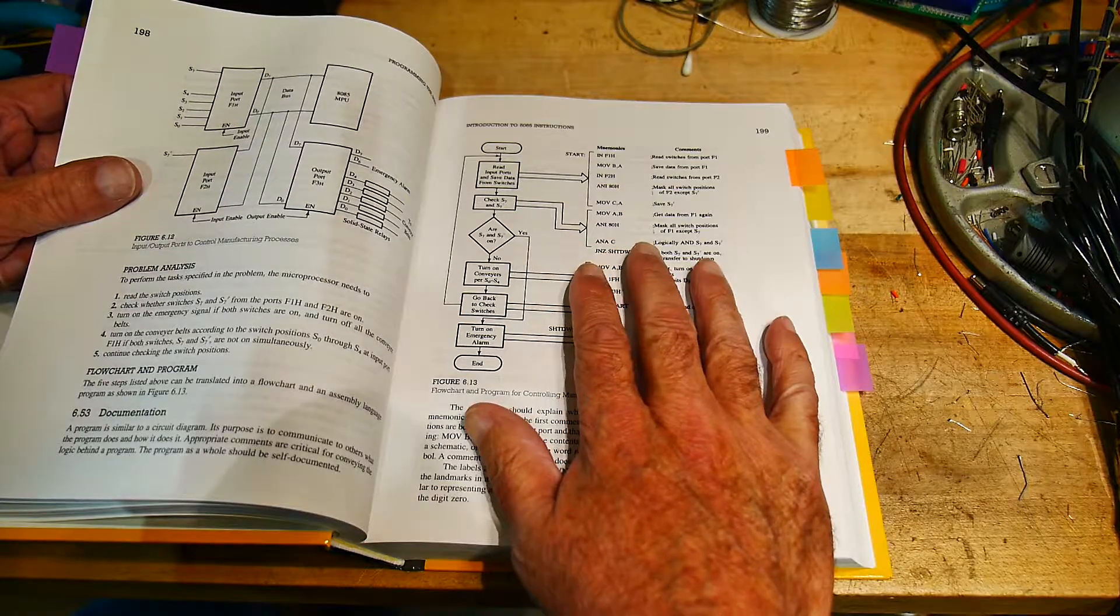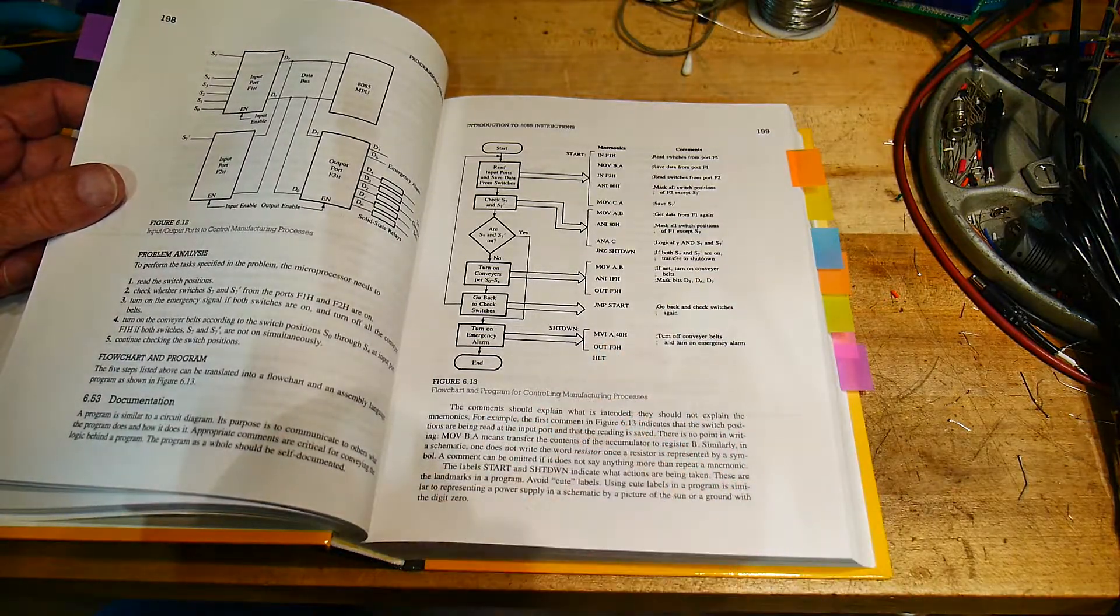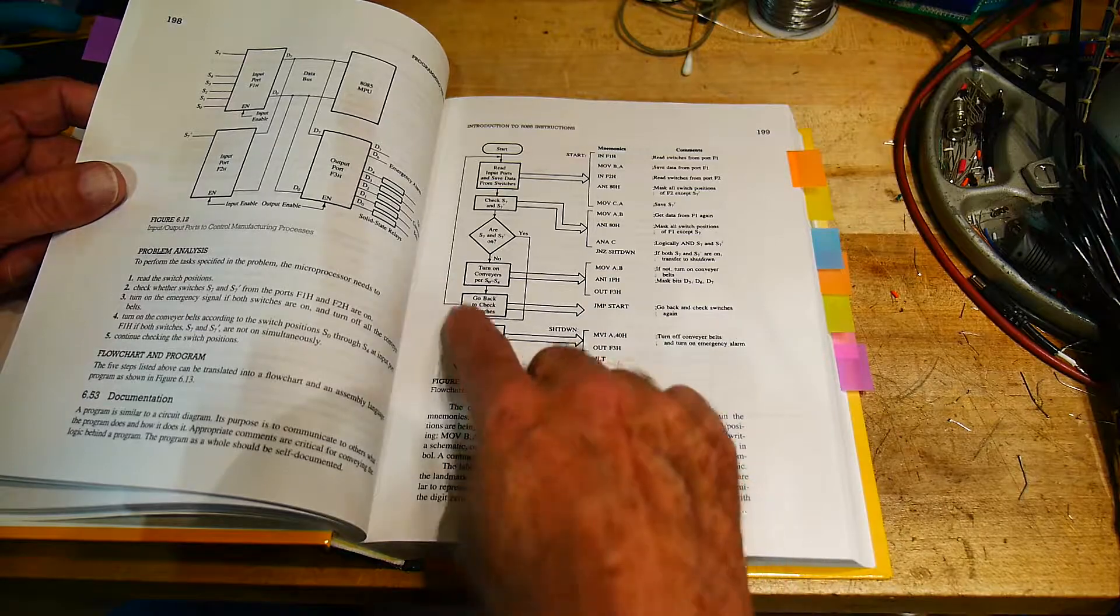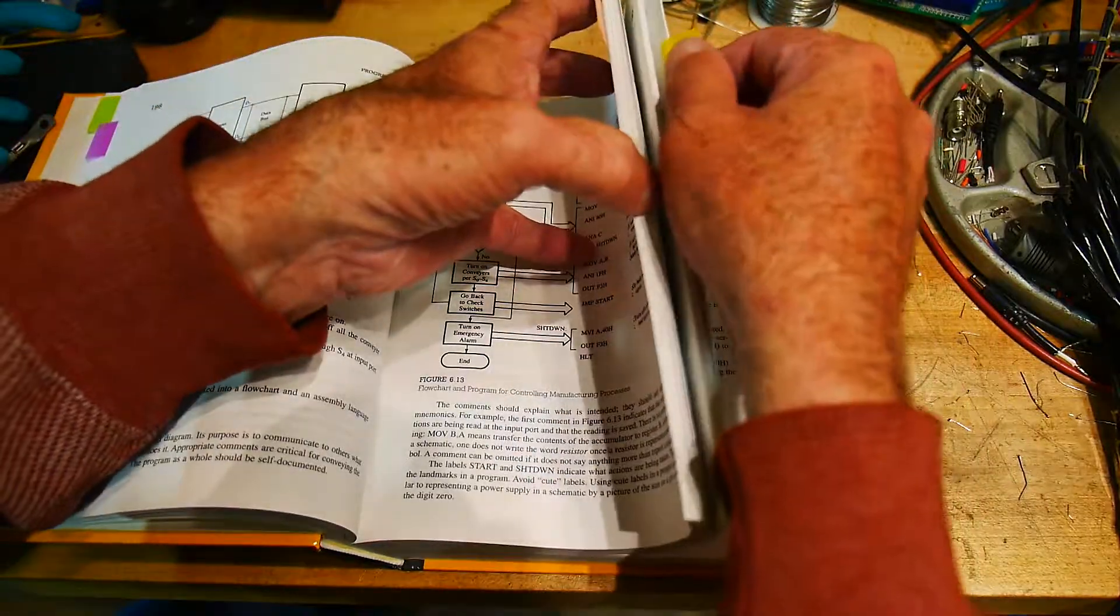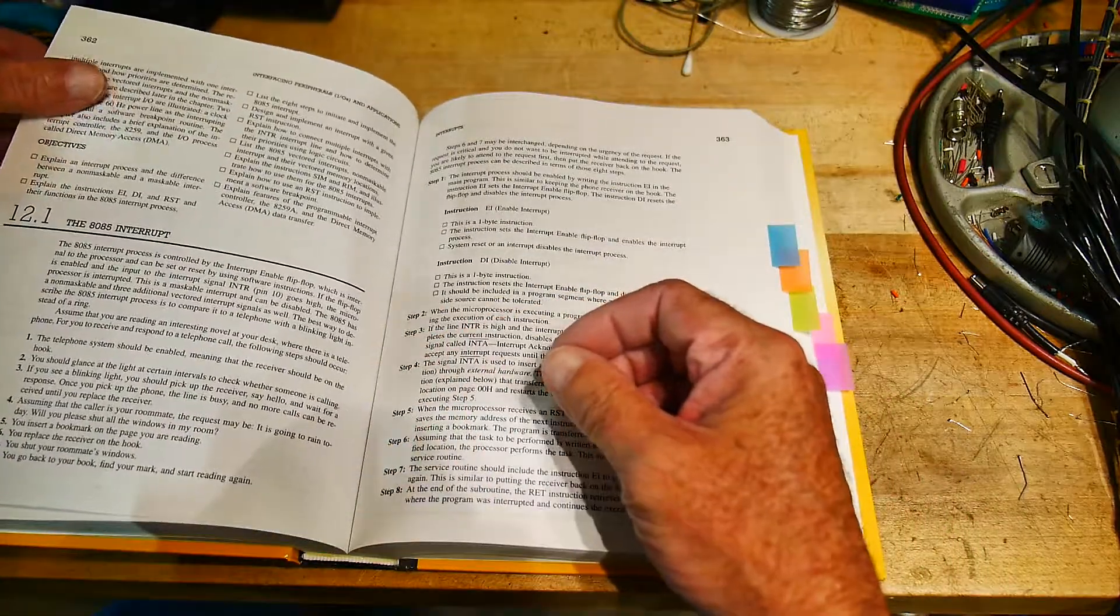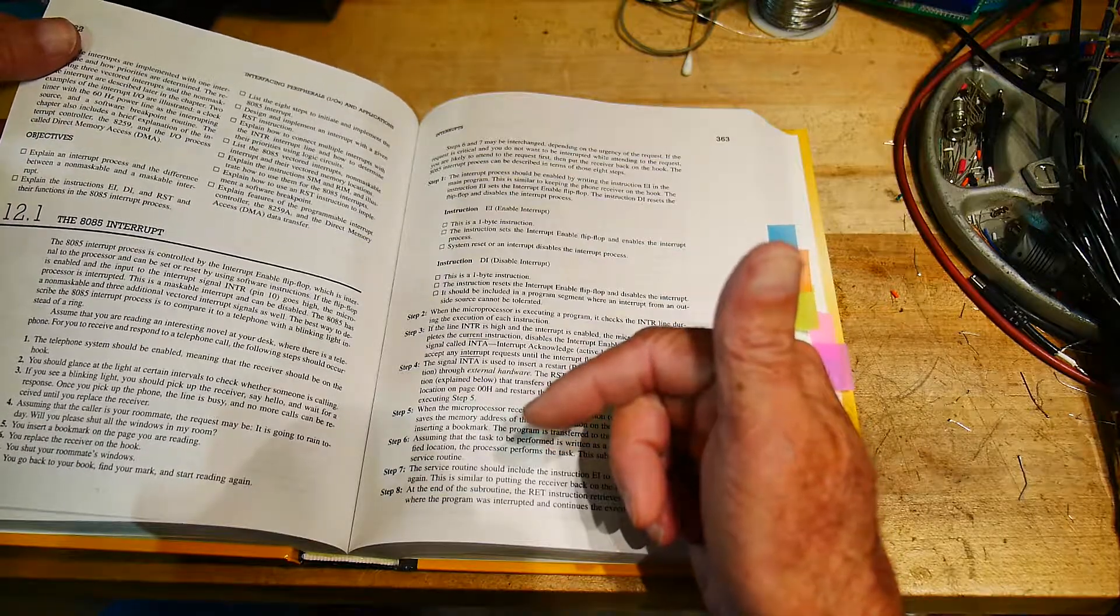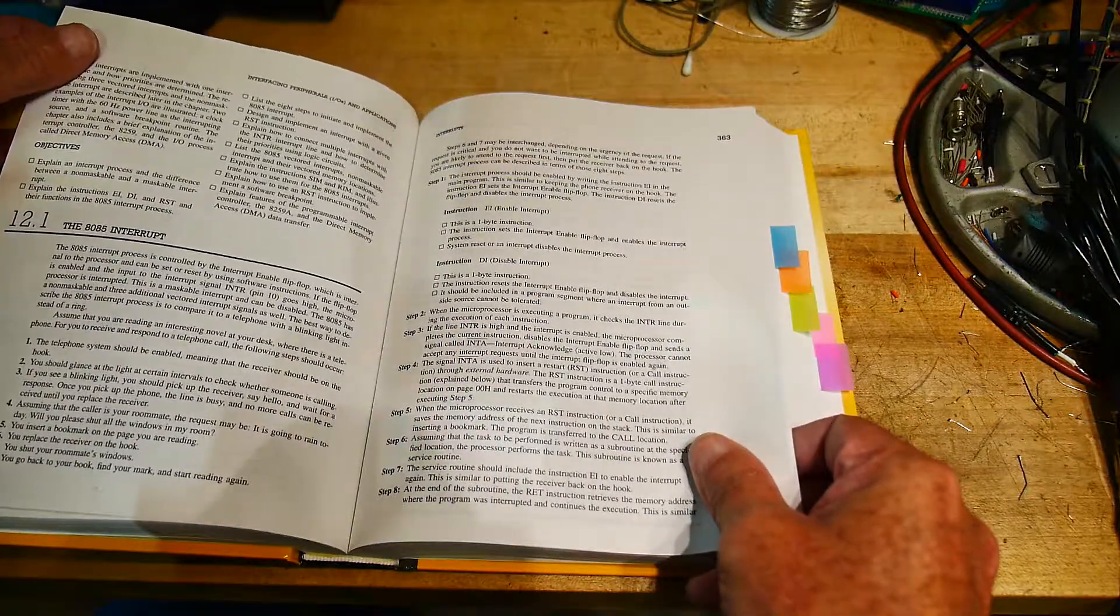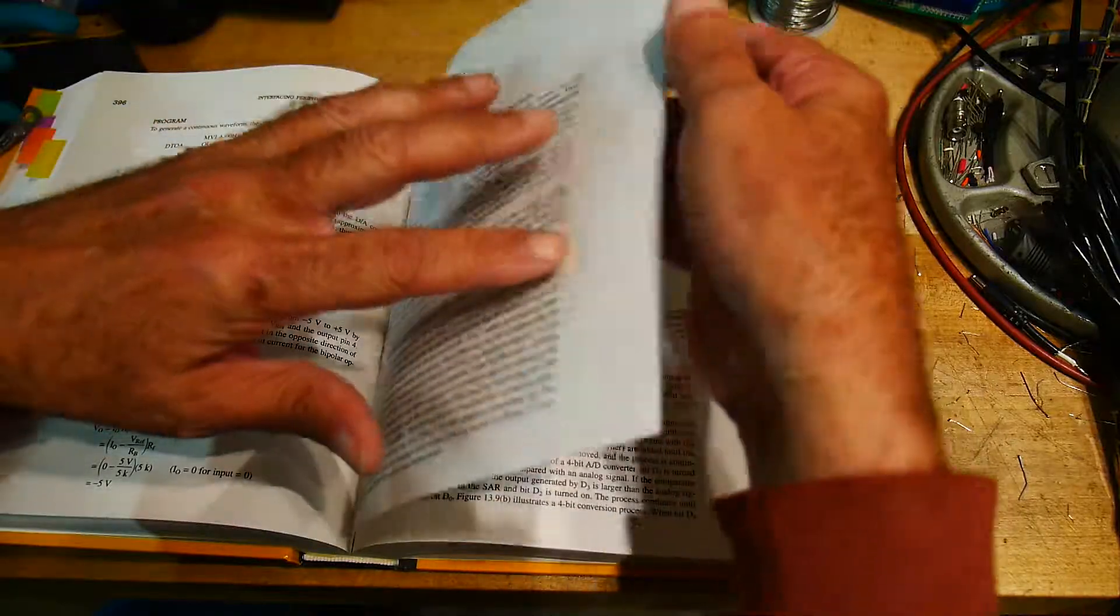Then it goes into programming, gives you some very good rules to go by for actually generating programs that are well documented, actually doing a flow chart. A lot of times looking at assembly code is difficult and having a flow chart is much nicer. There's a good section on interrupts, which is a really good place to start to learn what interrupts really do. The 8085 has a particular type of interrupt system but it gets you into the ideas of what interrupts do, how the microprocessor handles it, how stack operations work during interrupts and things like that.